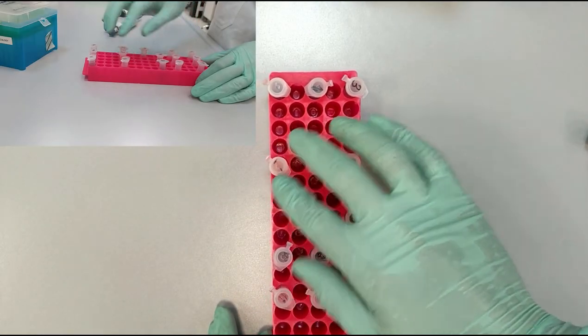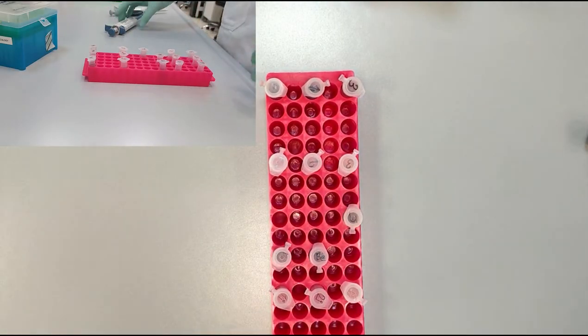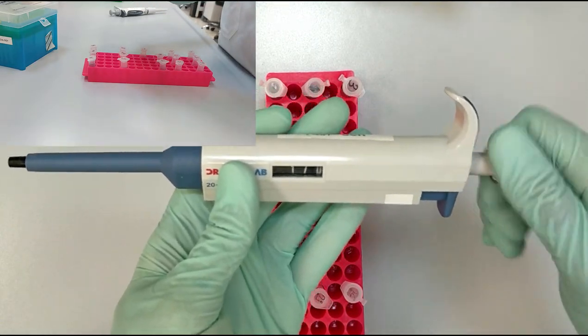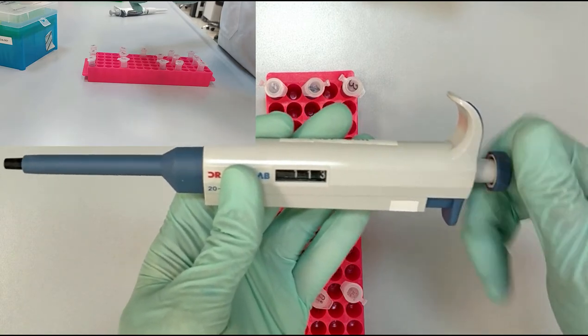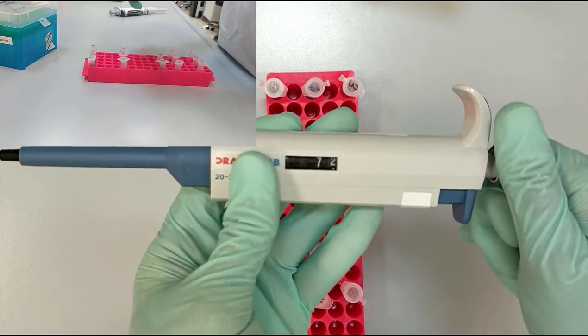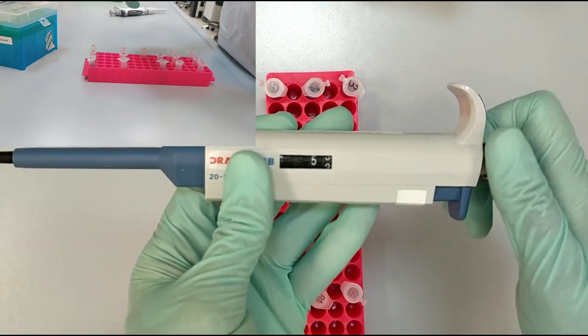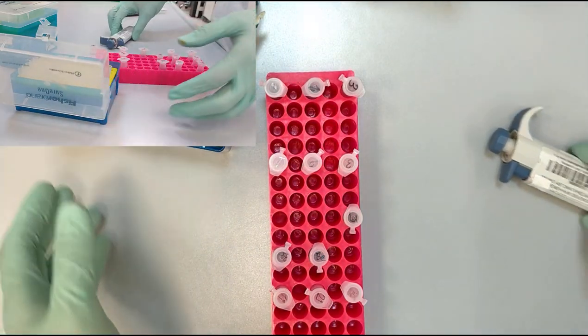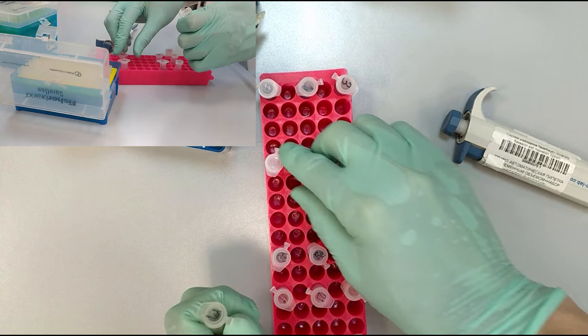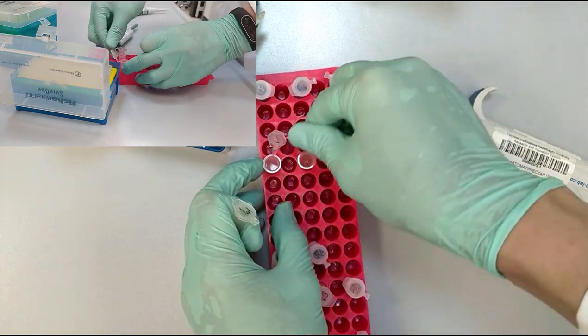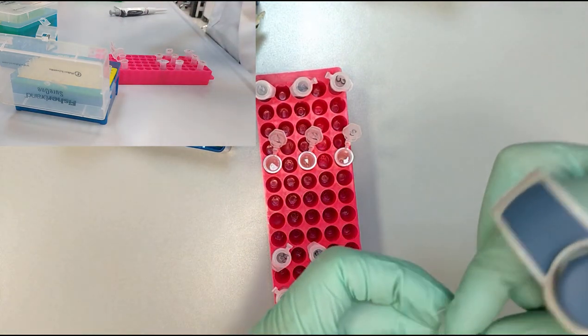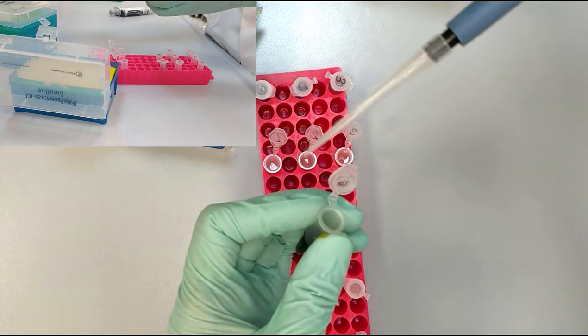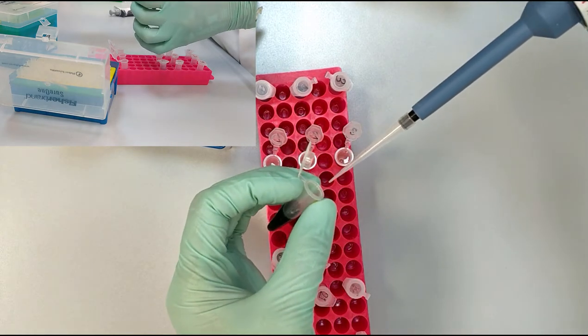Finally we have the third set of the secret solutions, and we are going to add 50 microliters of iodine to each of the tubes. Again we are opening each of these secret solutions, and then we start by mixing the iodine.